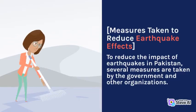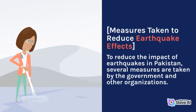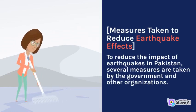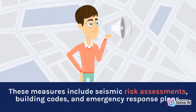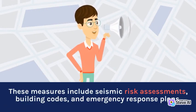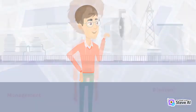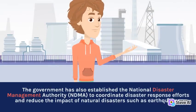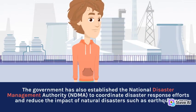To reduce the impact of earthquakes in Pakistan, several measures are taken by the government and other organizations. These measures include seismic risk assessments, building codes, and emergency response plans. The government has also established the National Disaster Management Authority (NDMA) to coordinate disaster response efforts and reduce the impact of natural disasters such as earthquakes.